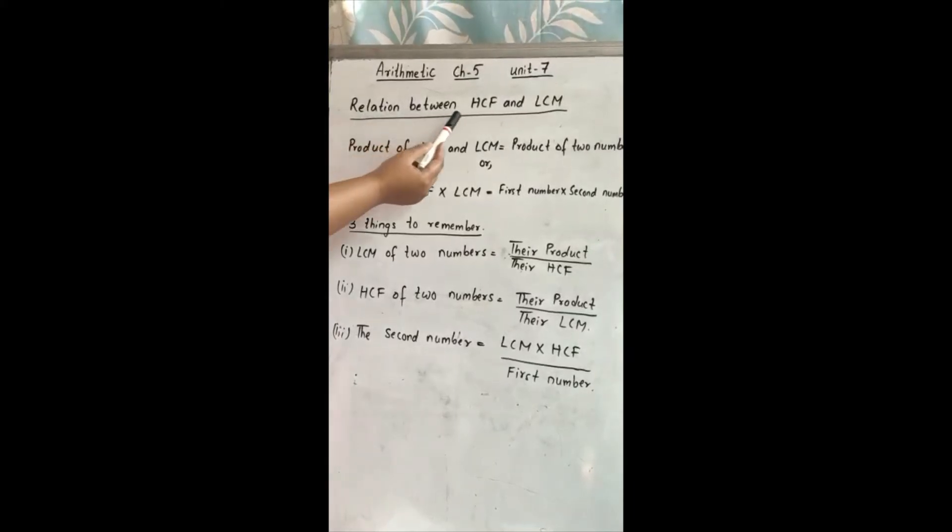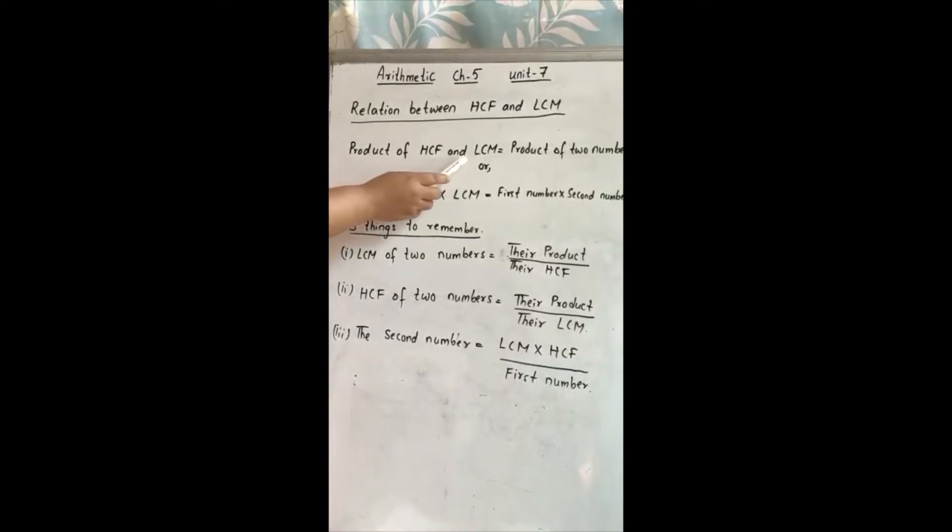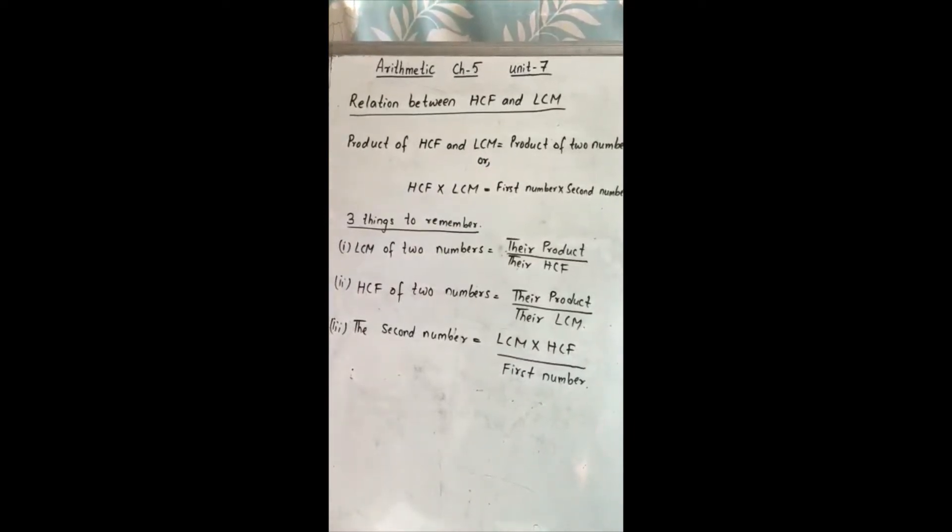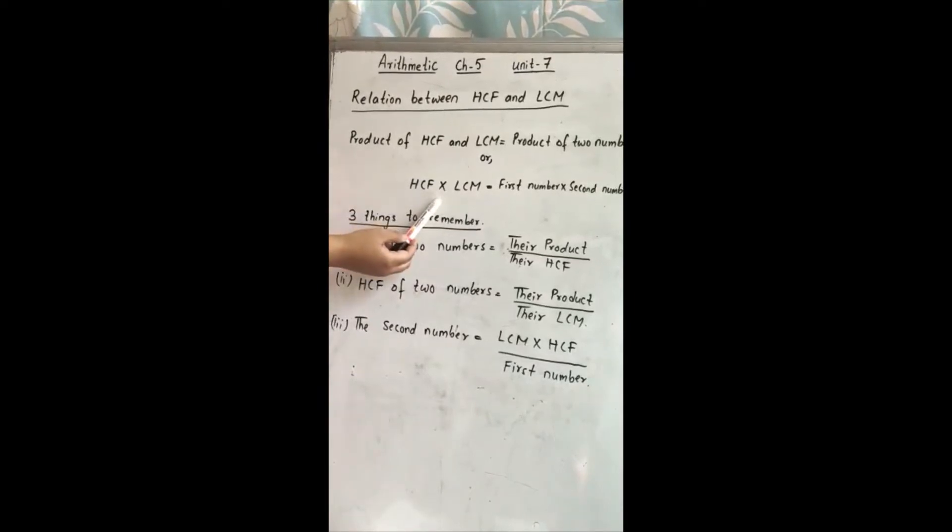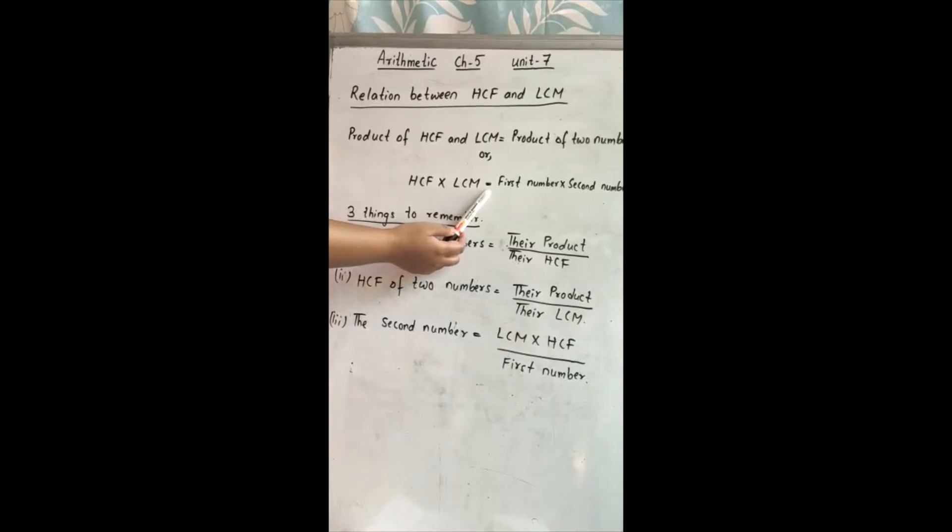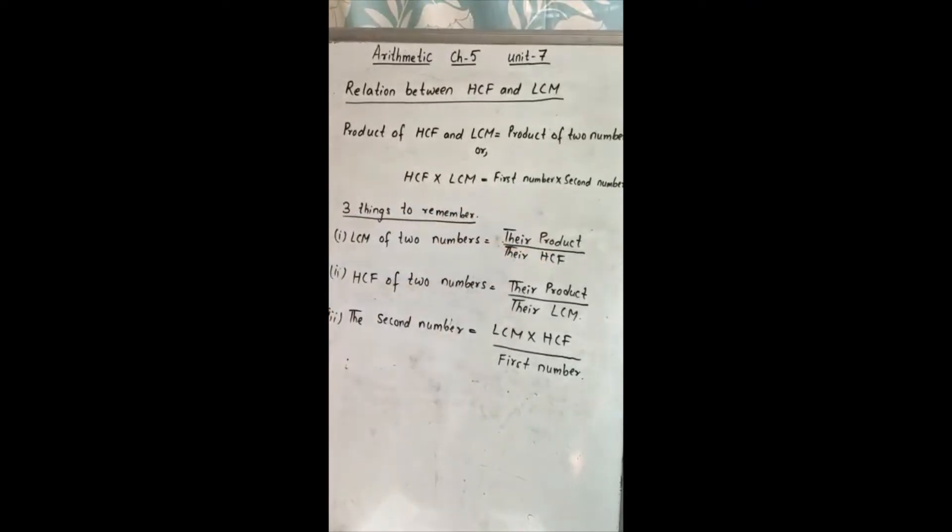Now let us see what is the relation between HCF and LCM. Product of HCF and LCM is equal to the product of two numbers. Now product means what? Multiplied. So HCF multiplied by LCM is equal to first number multiplied by second number.